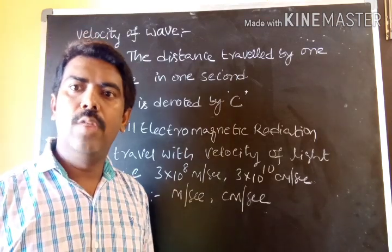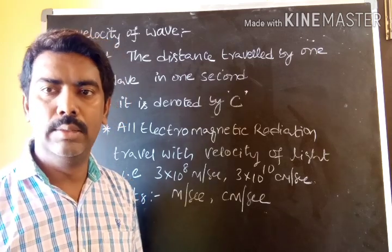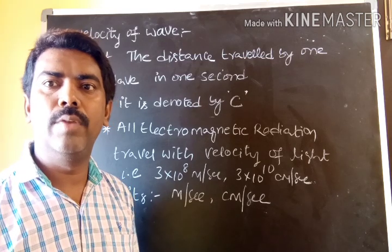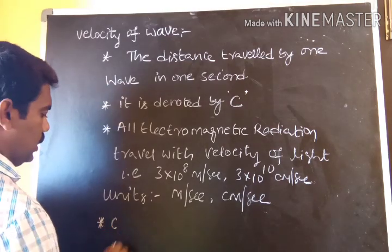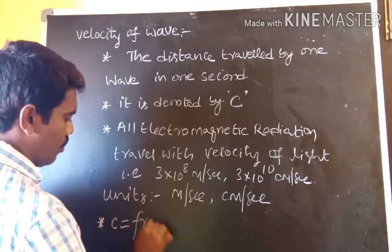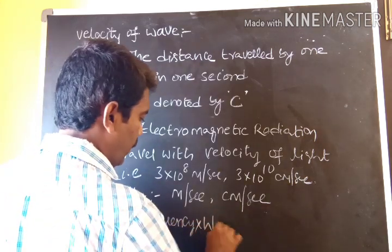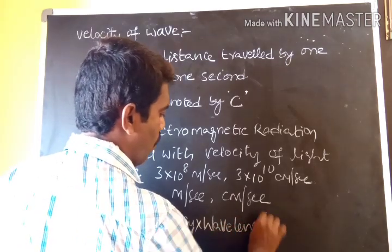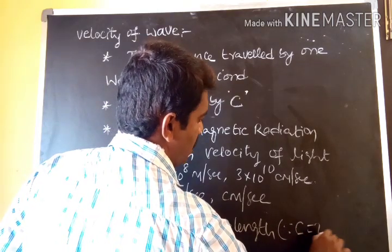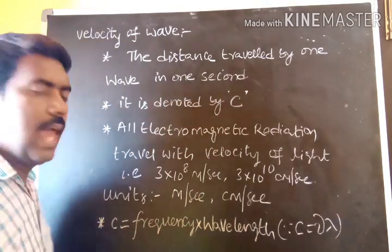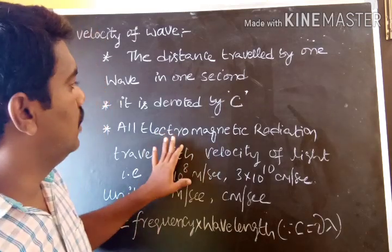Next, the formula for velocity of wave: the velocity of wave is the product of frequency and wavelength. So C is equal to nu (ν) into lambda (λ). C = νλ. This is the formula relating velocity, frequency, and wavelength.